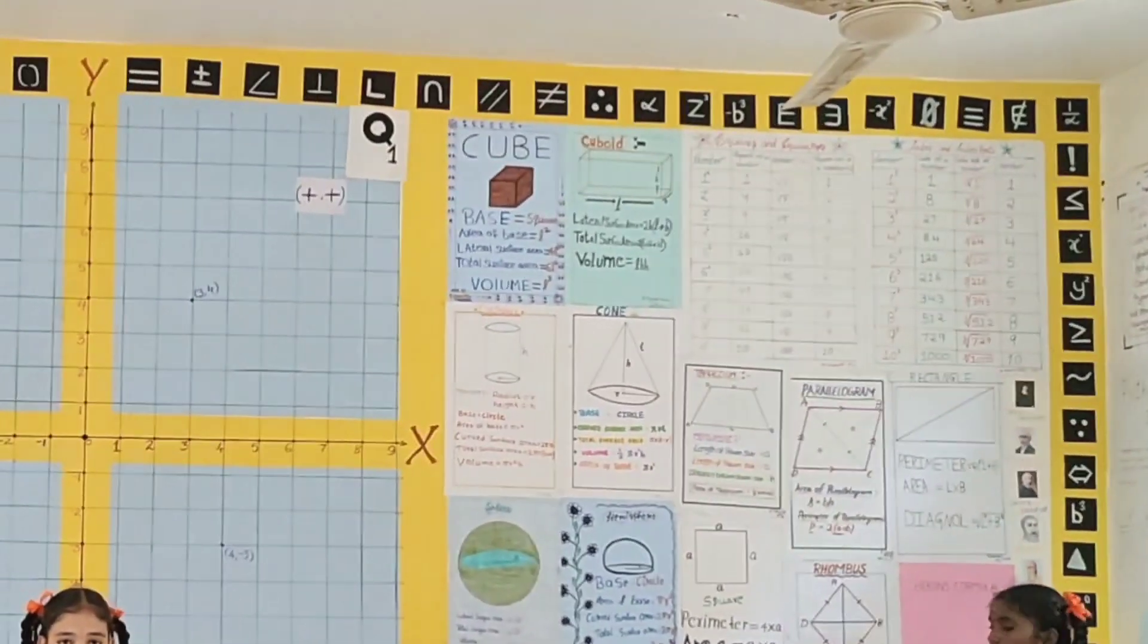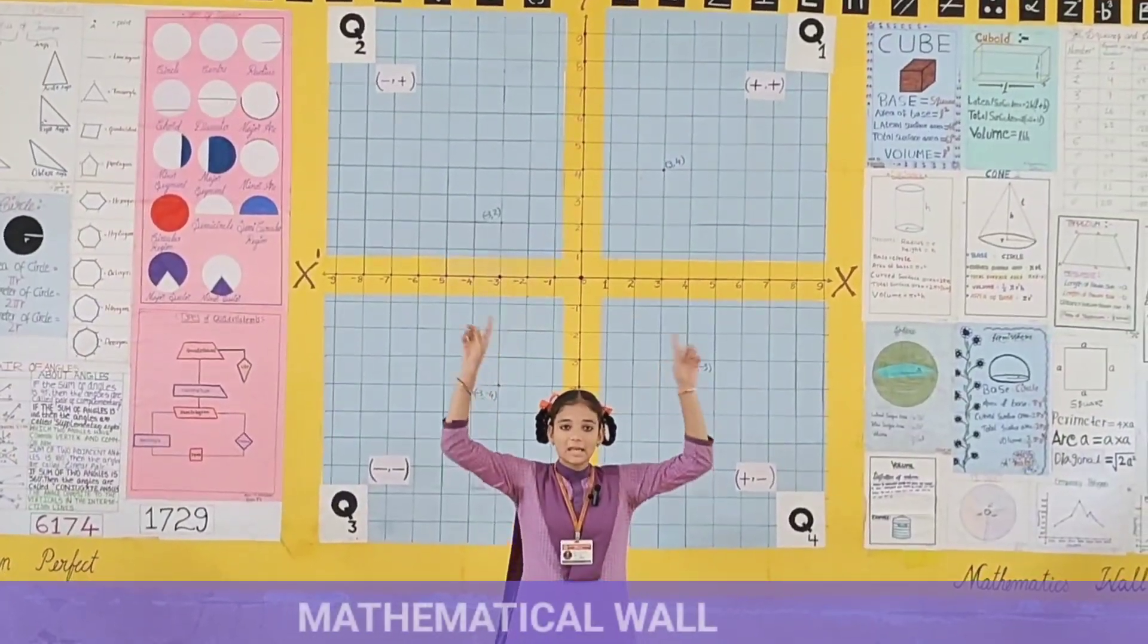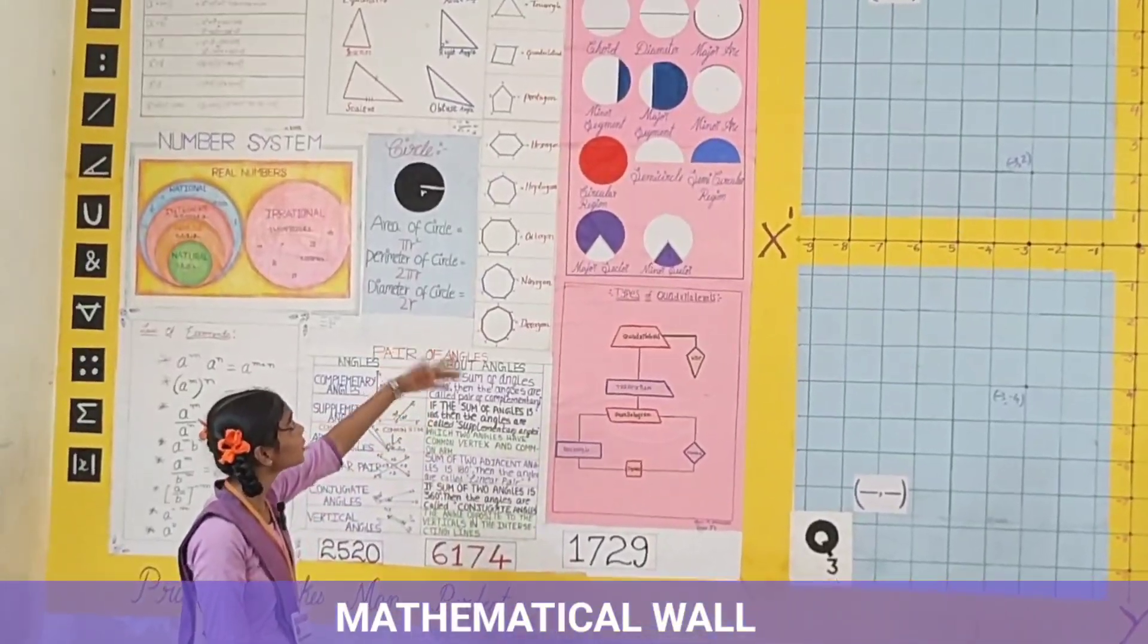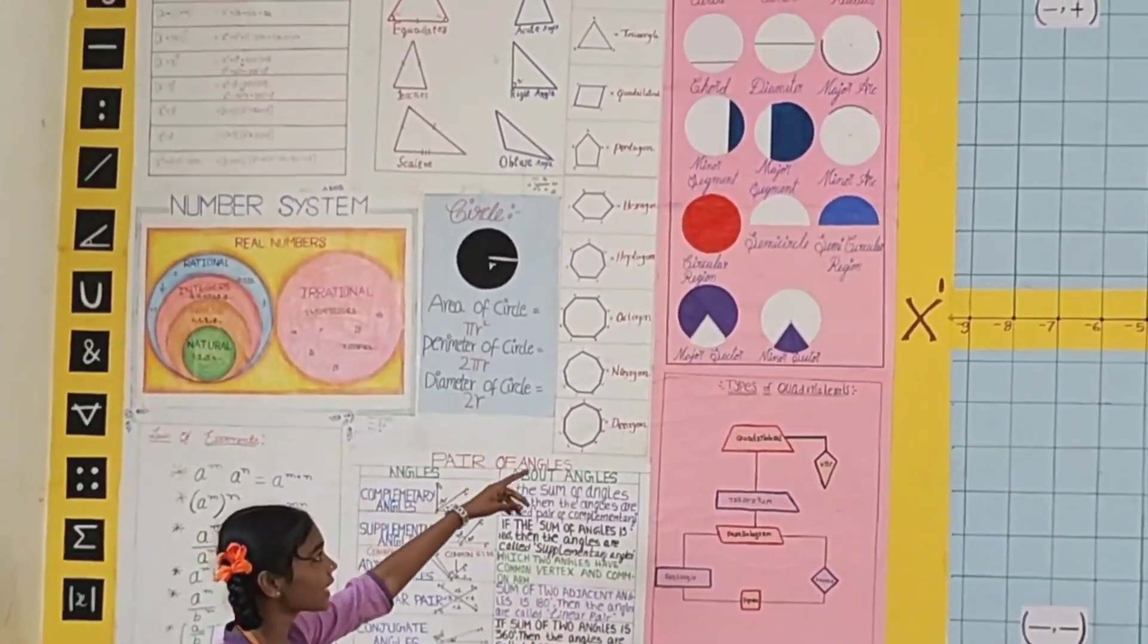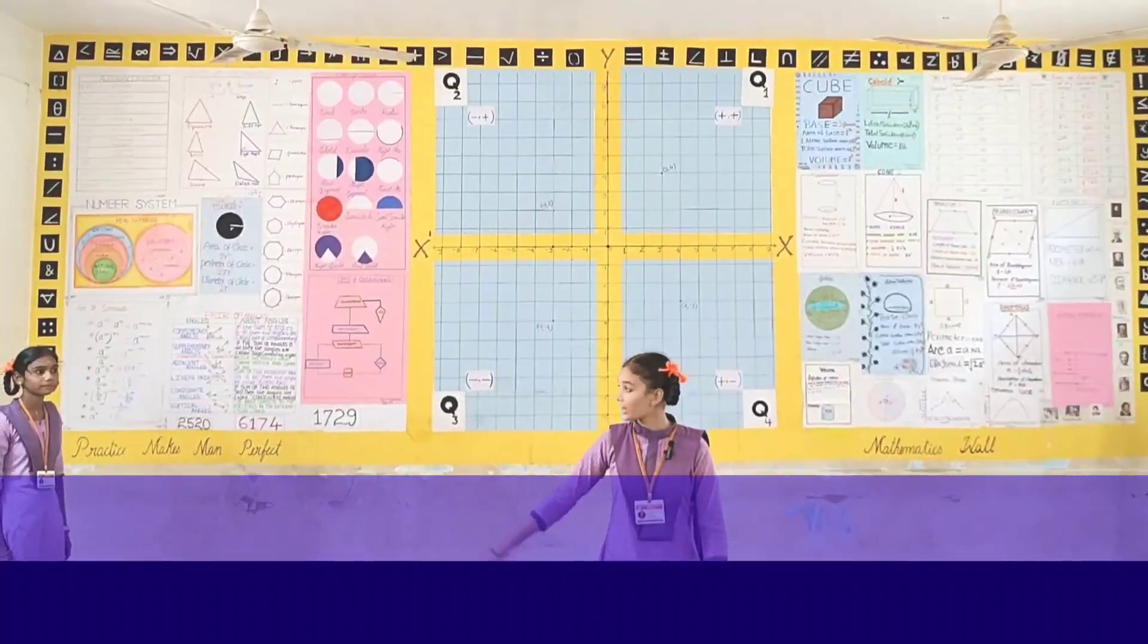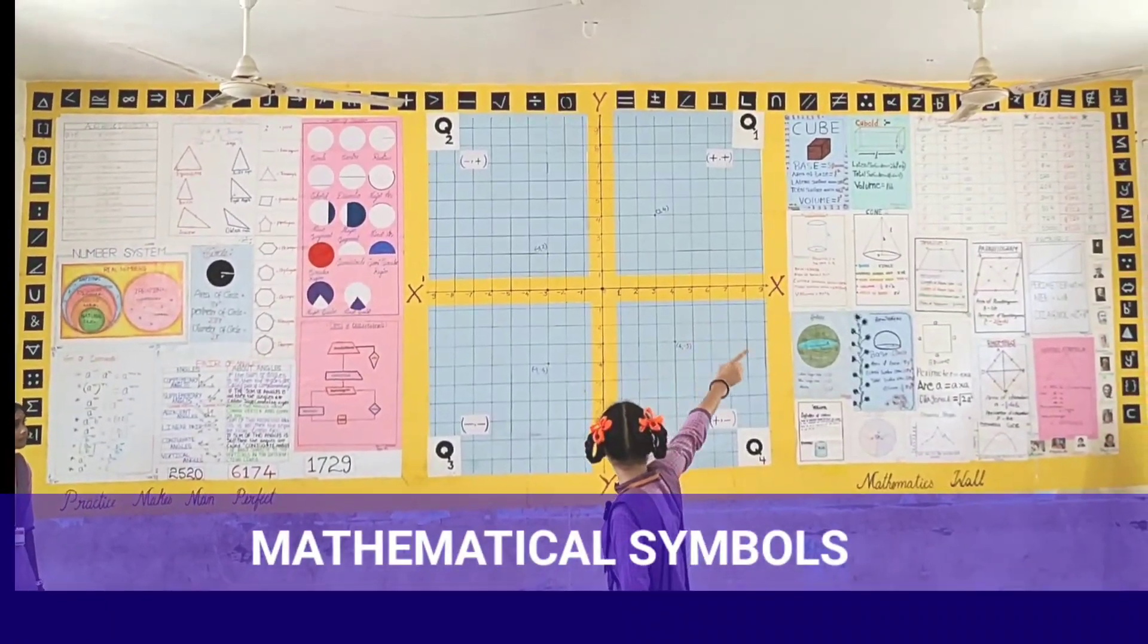This is the mathematics world, this is the coordinate plane. These are two-dimensional figures: triangle, circle, quadrilateral and polygons. These are mathematical symbols.